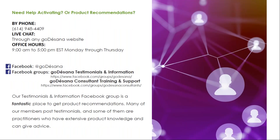If you need help activating or need product recommendations, you can contact us by phone by calling 614-948-4409 or by live chat through any GoTosana website during our regular office hours of 9 a.m. to 5 p.m. Eastern time, Monday through Thursday. We are also available on social media. Our testimonials and information Facebook group is a fantastic place to get product recommendations, where many of our members post testimonials and some are practitioners who have extensive product knowledge and can give advice.